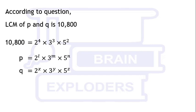So we can write p and q as 2^l × 3^m × 5^n and 2^x × 3^y × 5^z respectively.